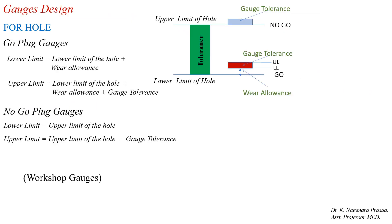Next we have to see the allocation of gauge tolerance and wear allowance for the hole as well as the shaft. We know that gauges used to check the hole dimensions are called plug gauges. Here we have to see what are the dimensions — lower limit and upper limit — of the go plug gauges as well as the no-go plug gauges. First we see the go plug gauges. Observe the schematic representation of the go plug gauges and the not-go plug gauges for the hole, showing the gauge tolerance and wear allowance.